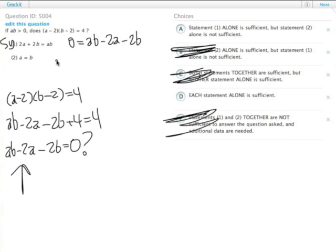Statement 2 telling us that a equals b, we'd have to try some values out to see whether that's right. So for example, if a equals b equals 4, then a minus 2 will be 2, and b minus 2 will be 2, and that will equal 4 for sure.